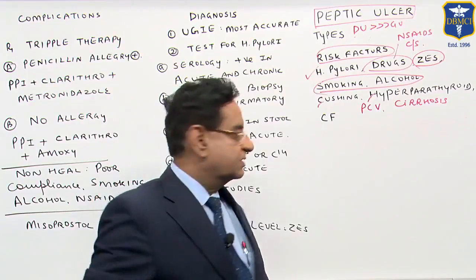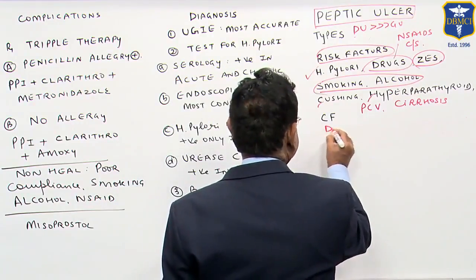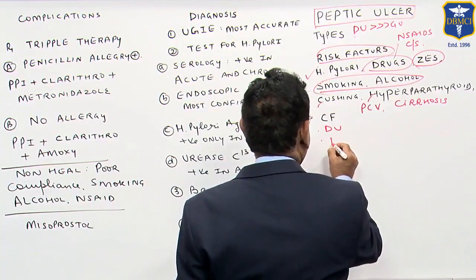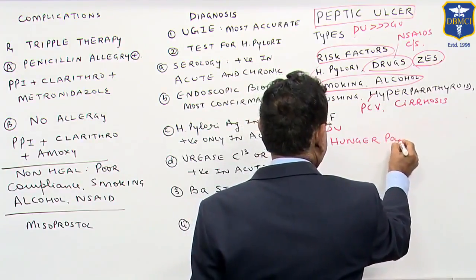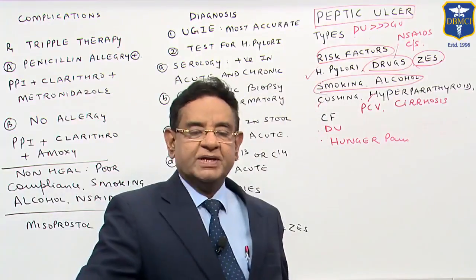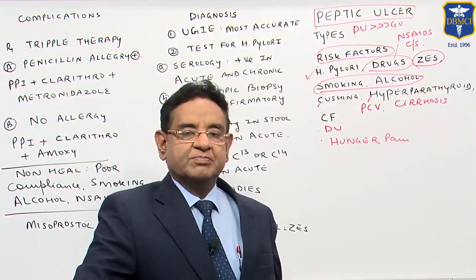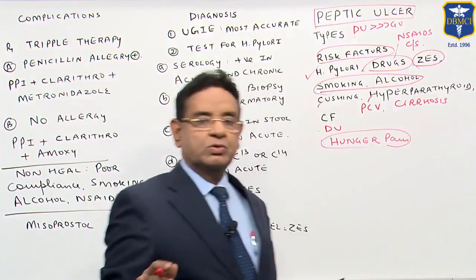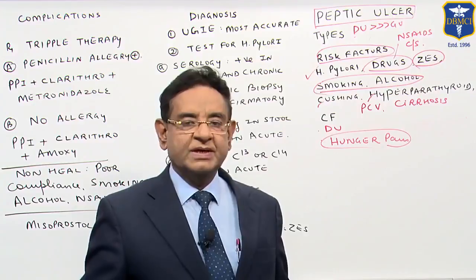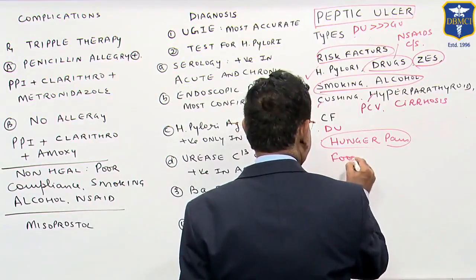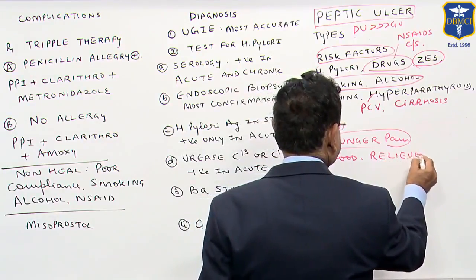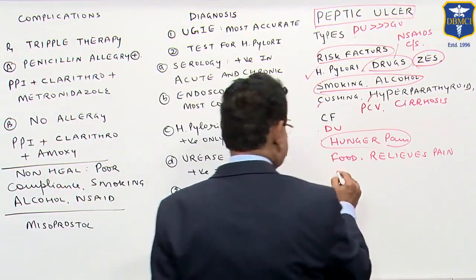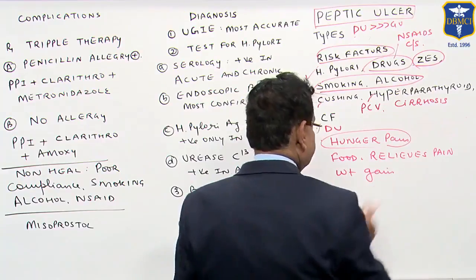Now, what are the clinical features? Clinical features as far as duodenal ulcer are concerned — the classical feature is late night hunger pain. Typically, pain occurs at midnight when the patient is sleeping, after 3 to 5 hours of taking meals, because whenever the stomach is empty the patient has pain. He will get up at night and eat something. Food relieves the pain. Hence, weight loss is not a feature — rather, weight gain is a feature.